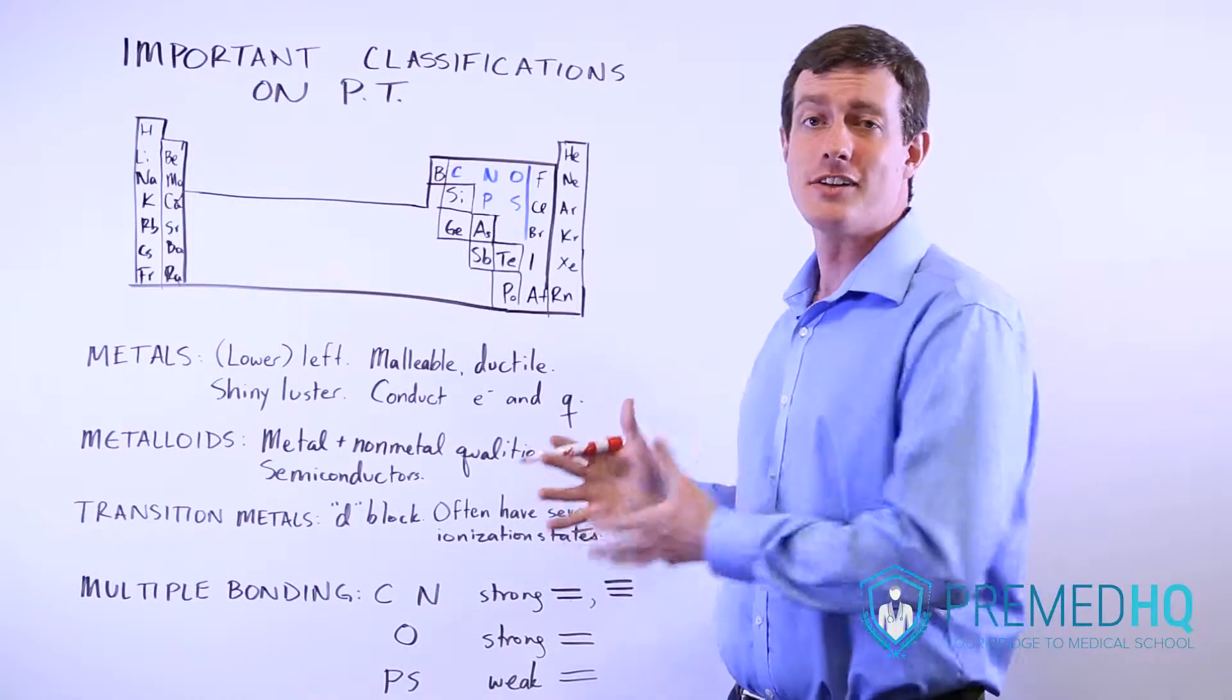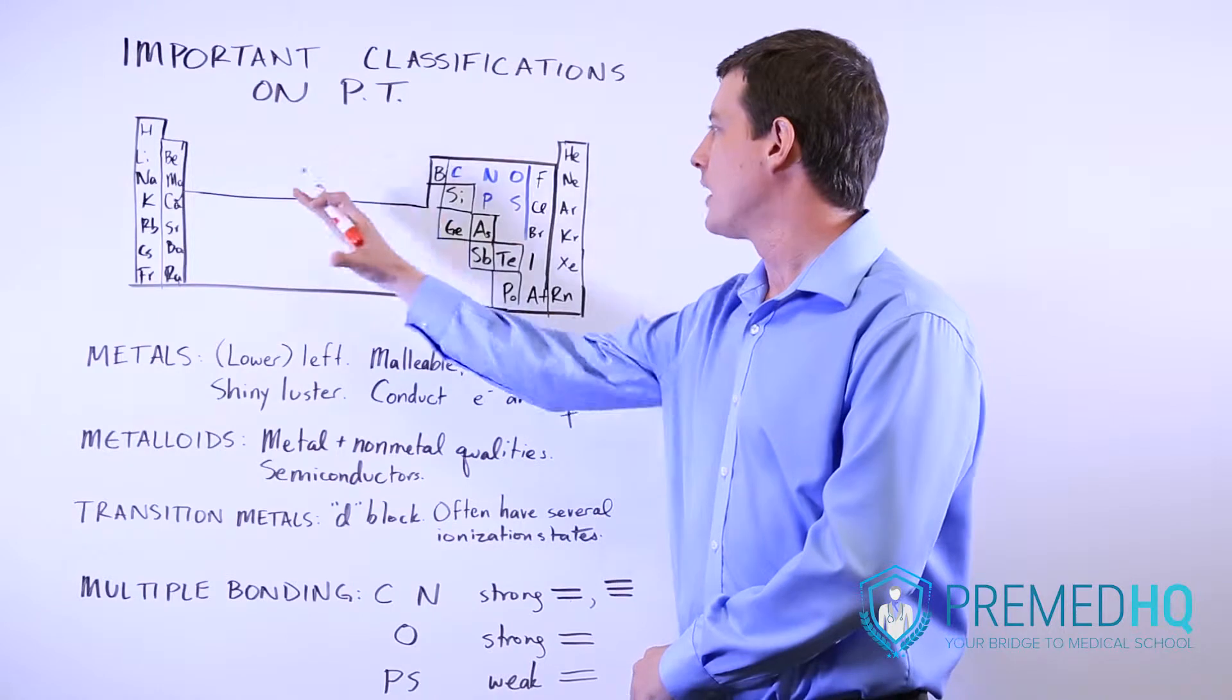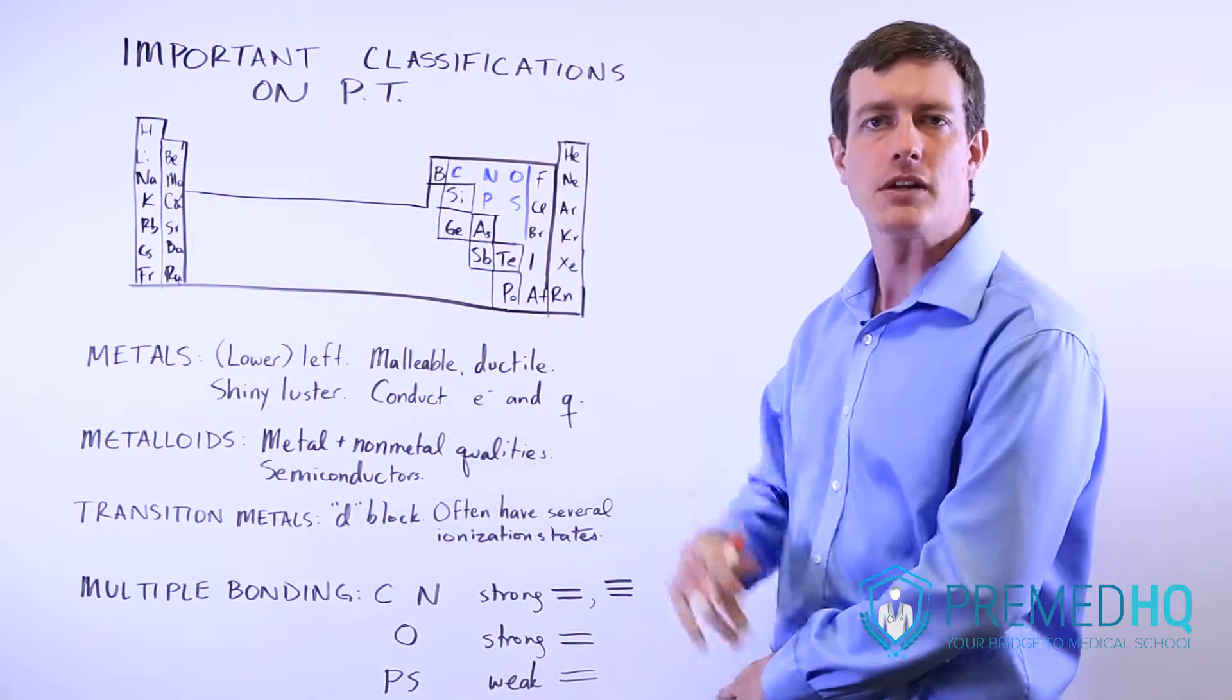Another important set of groupings to understand in the periodic table is the distinction between metals, metalloids, and nonmetals.